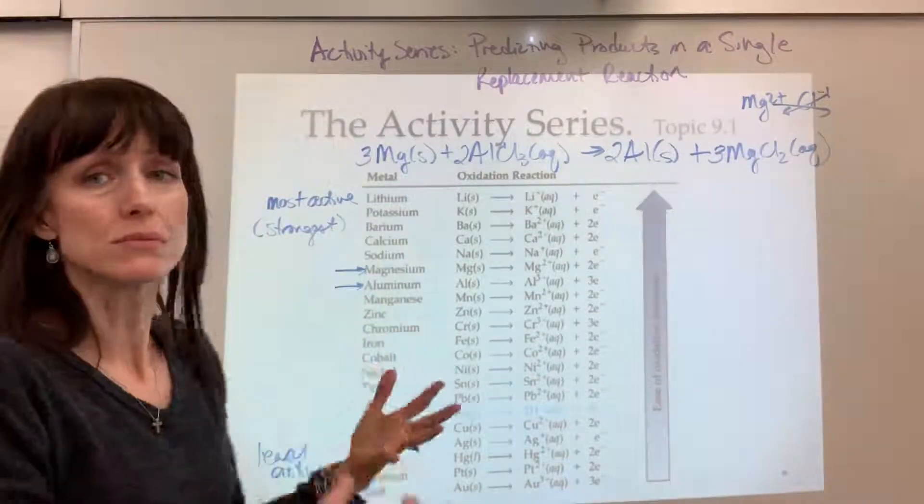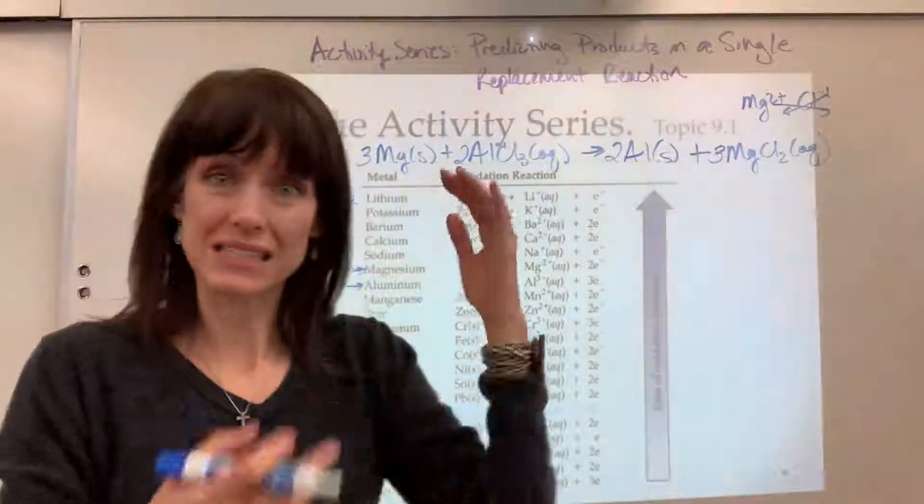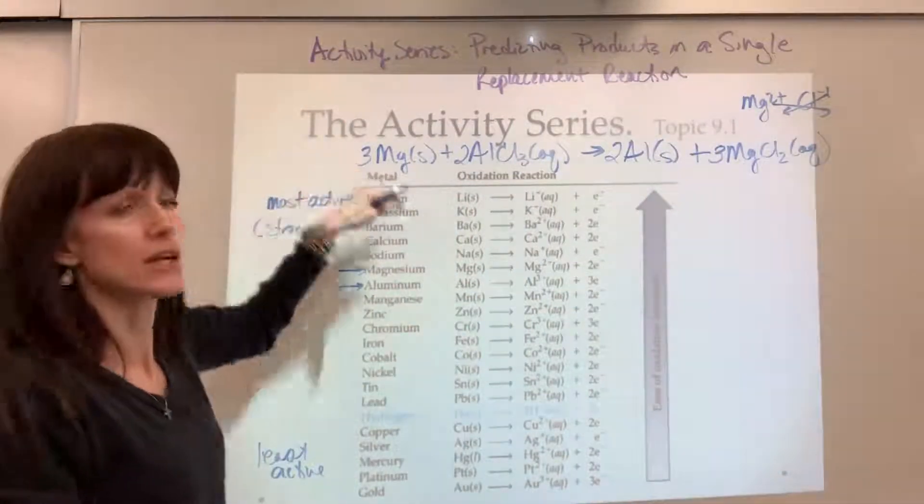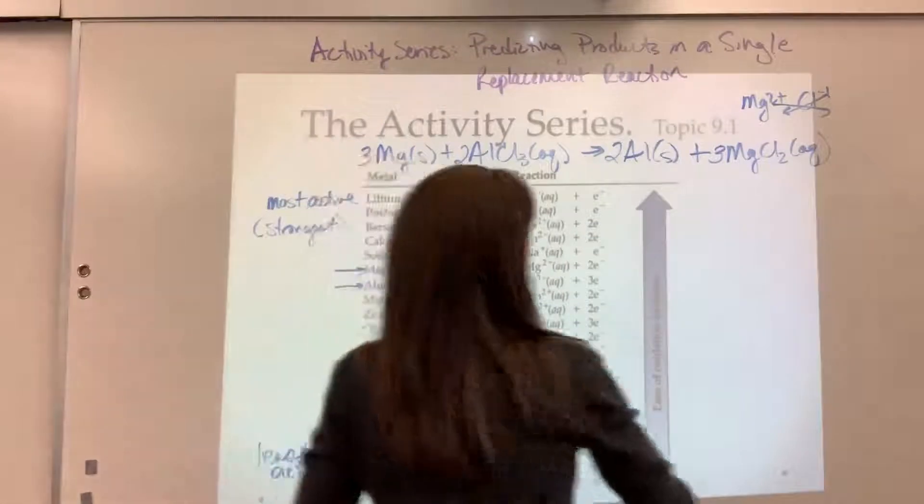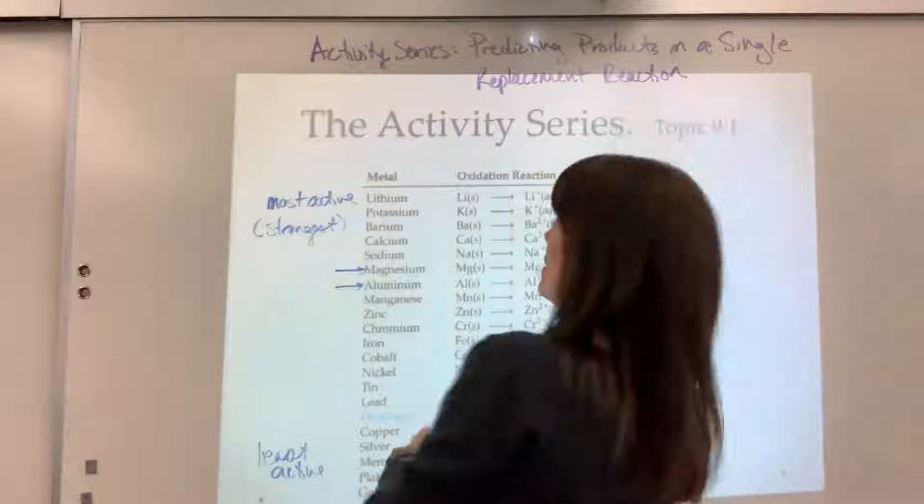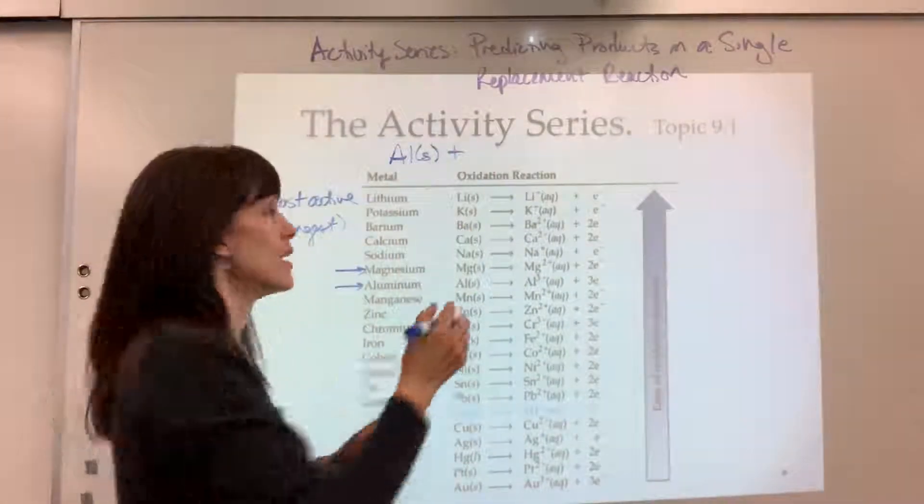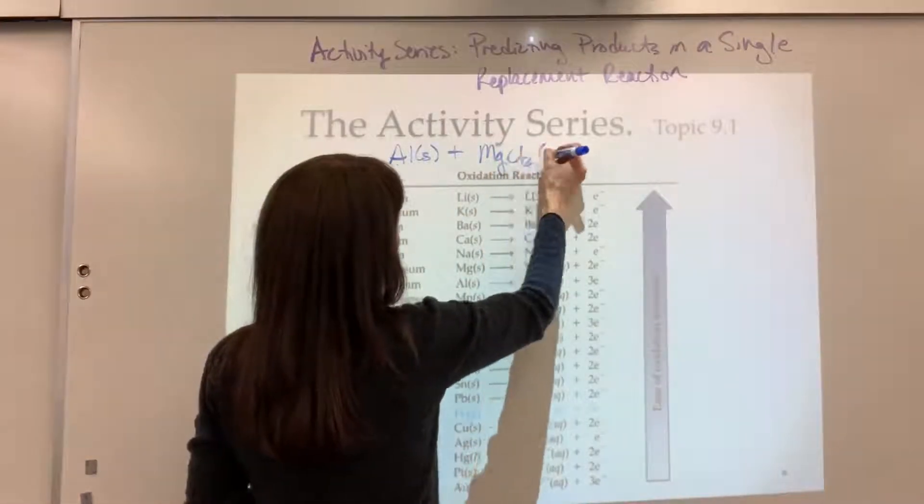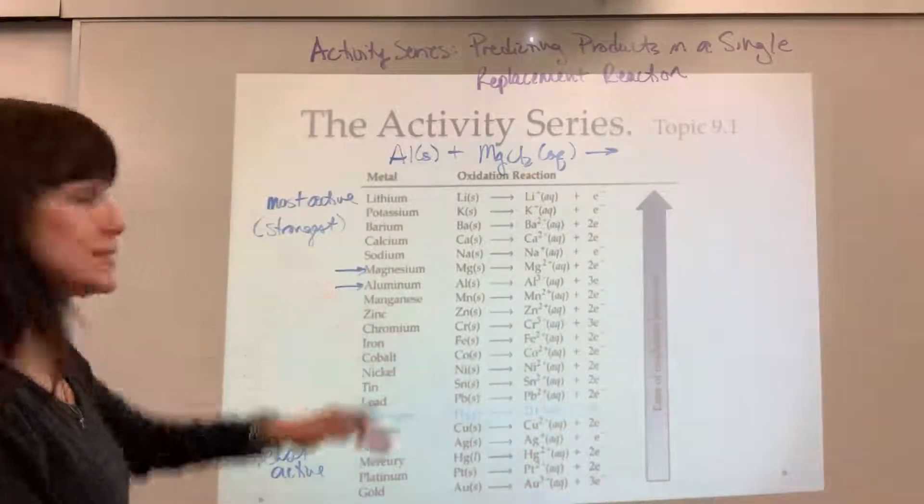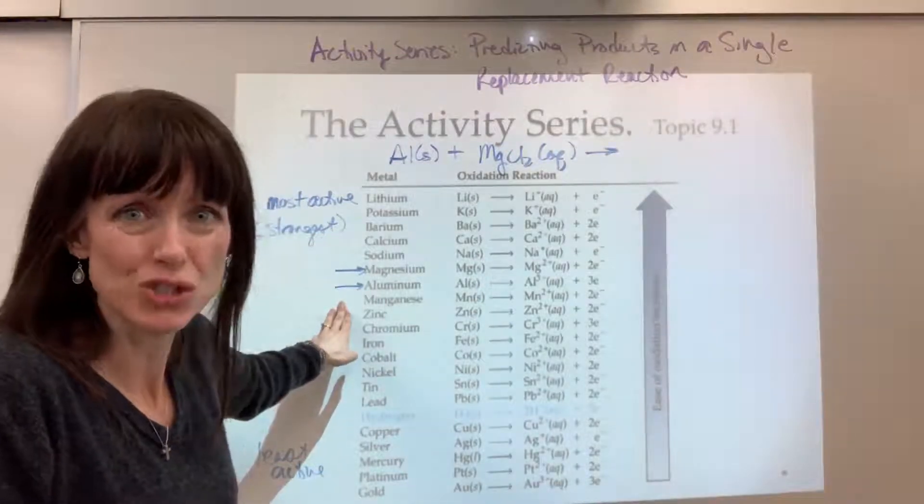Now you might be saying, well what if it's just opposite? What if the metal that's by itself is less active, is not as strong? Let's take this, and I'll show you a situation where we would fall into that scenario. Let's pretend this time that we have the aluminum, and I'm going to mix that with the magnesium chloride. I want to predict products, so I find my magnesium and my aluminum.